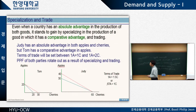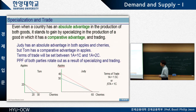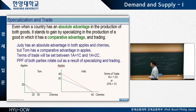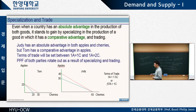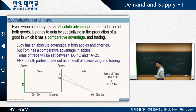The contribution of David Ricardo regarding international trade is this: even when a country has an absolute advantage in the production of both goods, the country stands to gain by specializing in the production of a good in which it has a comparative advantage and trading. By specializing and trading, the country can gain even if it has absolute advantage.